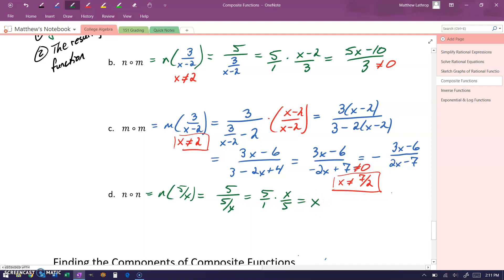In this case, our resulting function has no restricted values. But when we plugged in 5 over x, we do get the restricted value that x cannot be equal to 0. So we get that one restricted value in our domain.